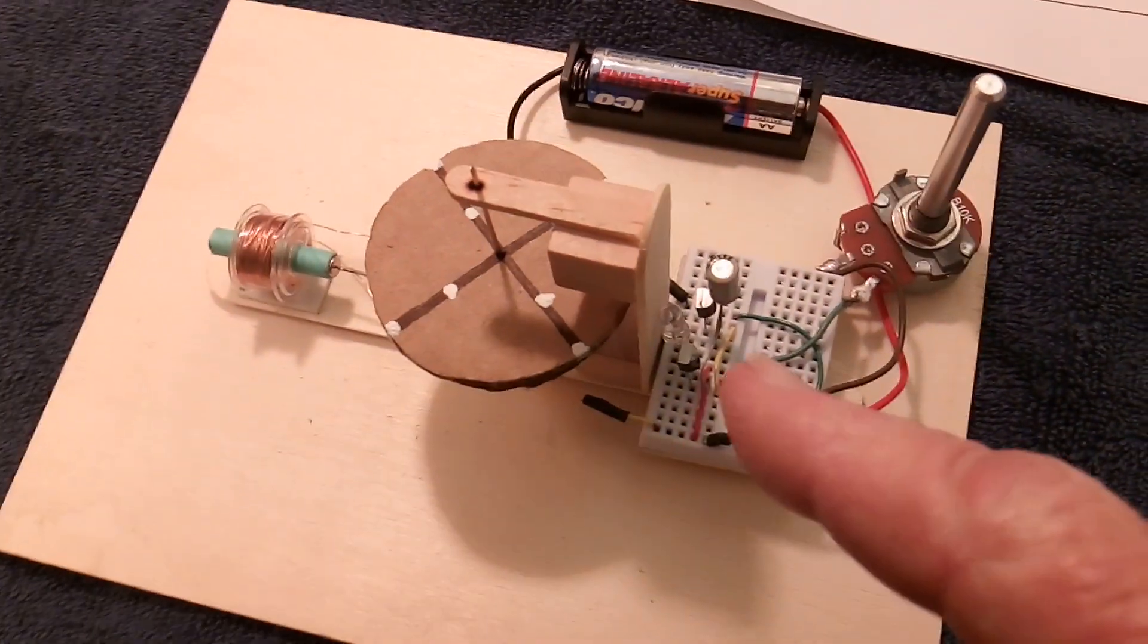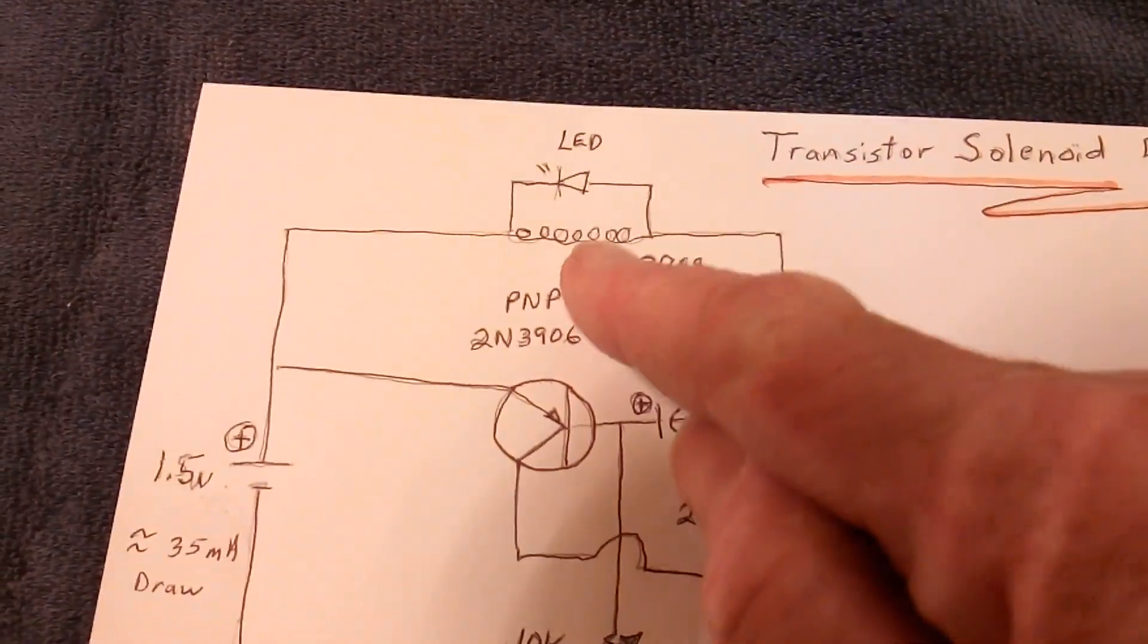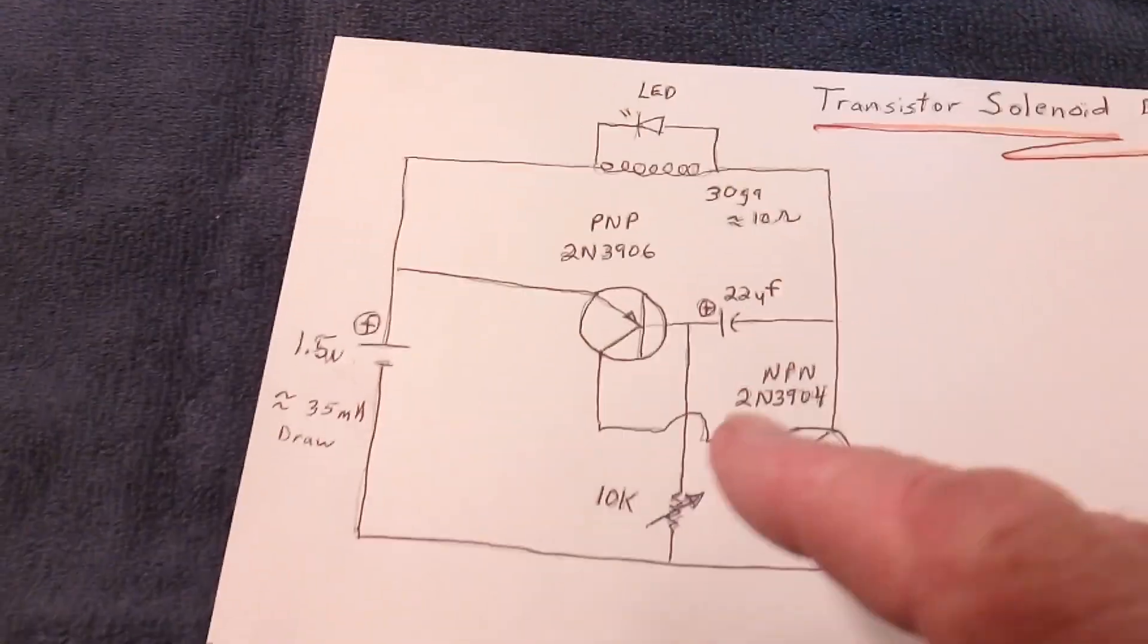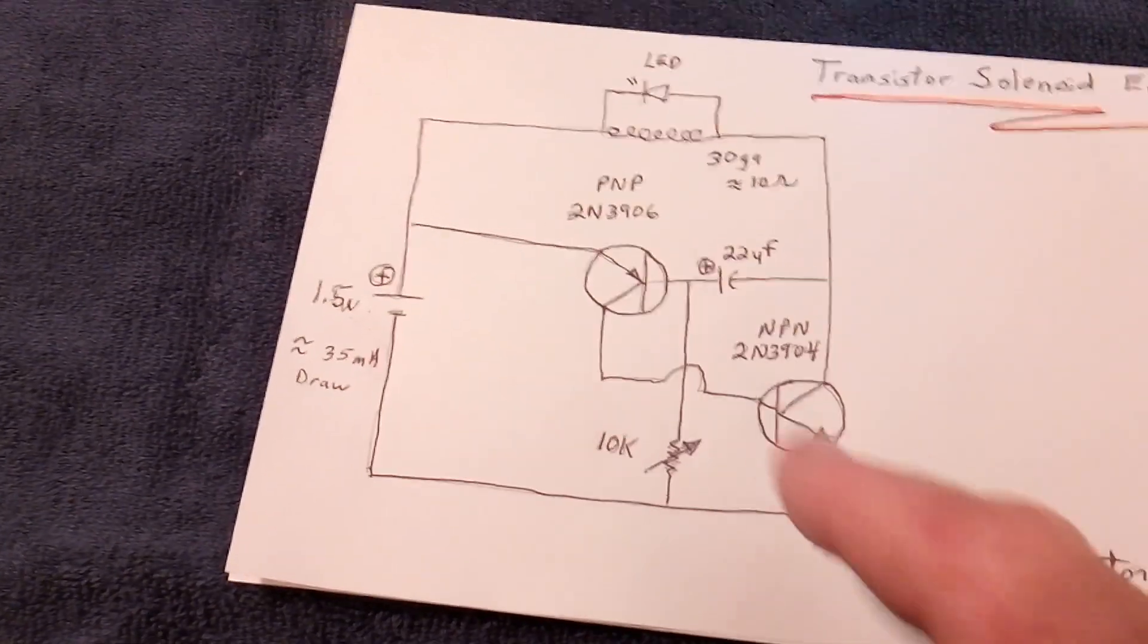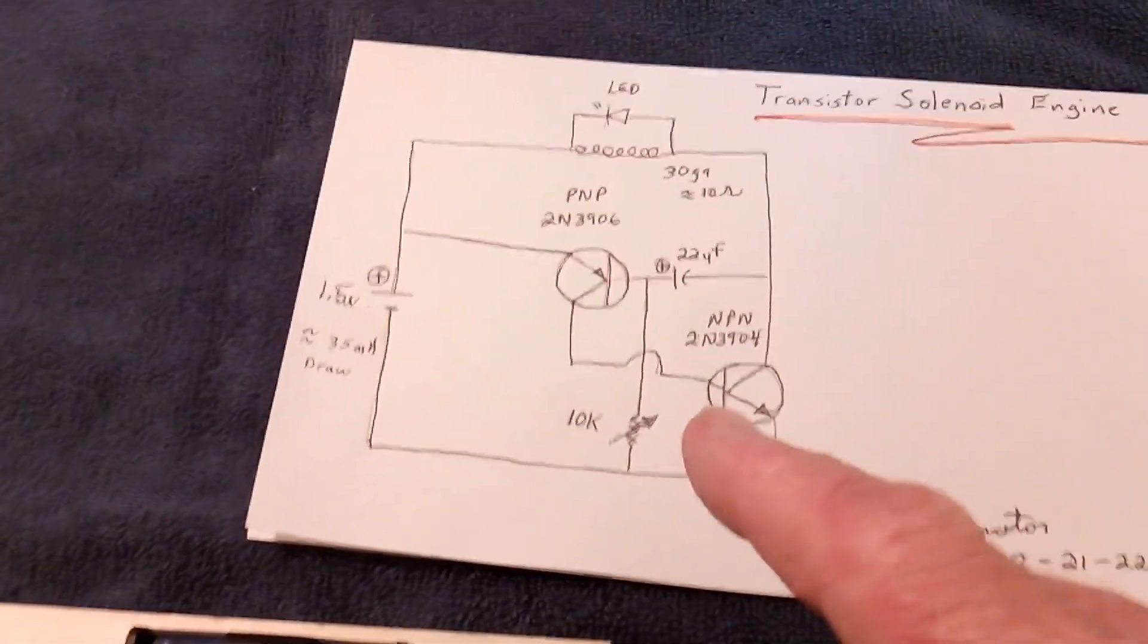You see the LED just blinks. That's this tank that's set up between the coil and the capacitor - sloshes back and forth using this complementary transistor switching thing.